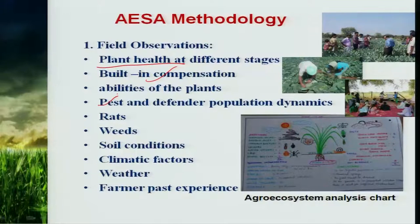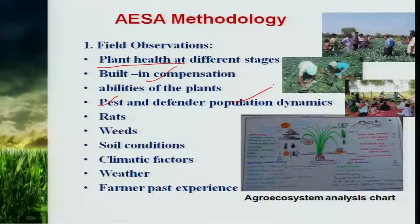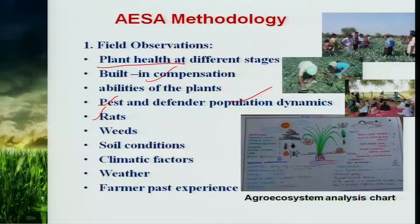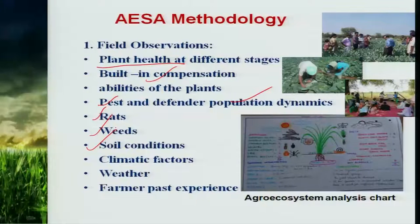Then, what is the overall pest and defender population in his situation? Other than these, he should record the problems associated with rats, weeds, and soil conditions — whether the soil is wet or dry at a particular situation — and overall what climatic factors are influencing the crop.